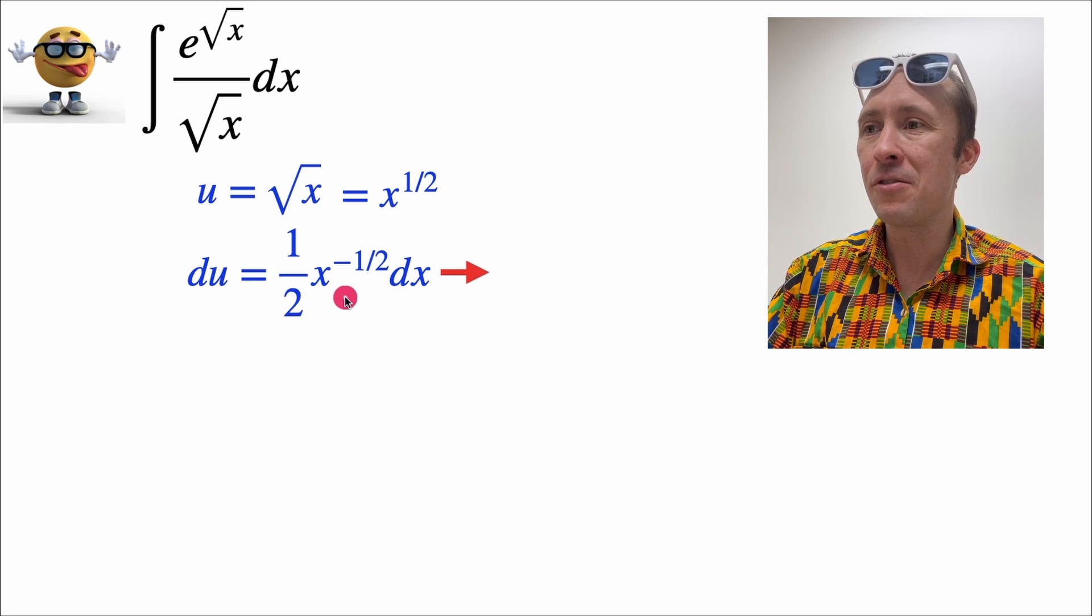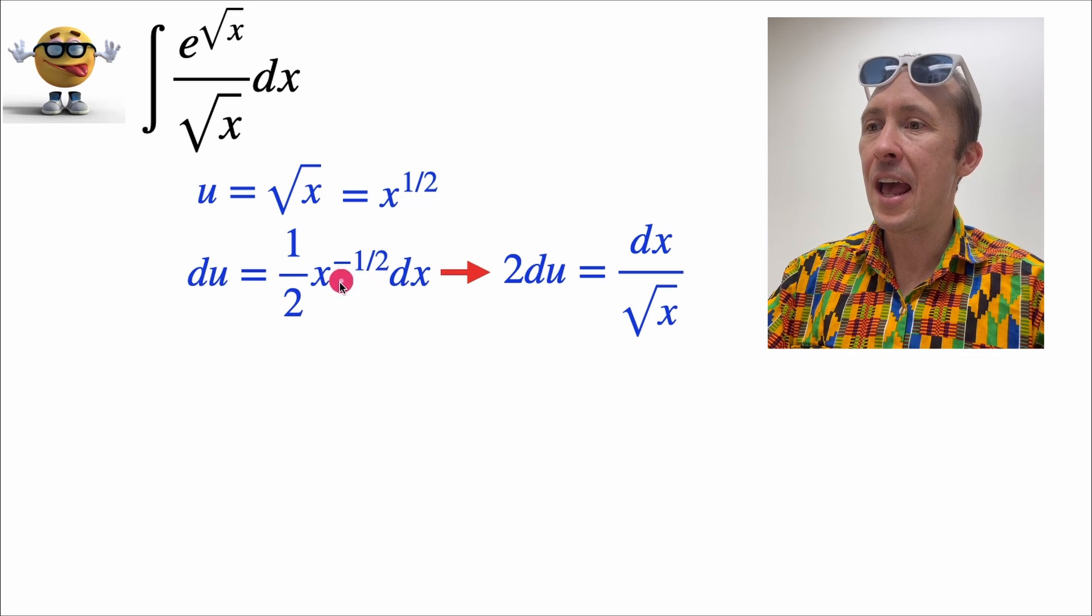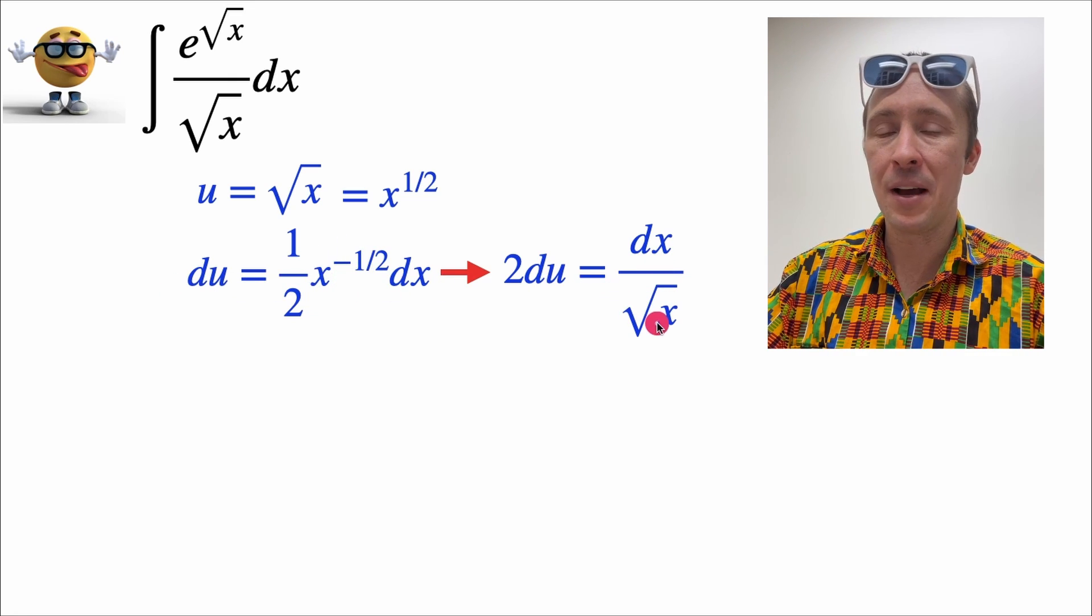And this can be rearranged to give two times du if we put two to the other side. And we'll convert back into the square root form, dx divided by the square root of x.